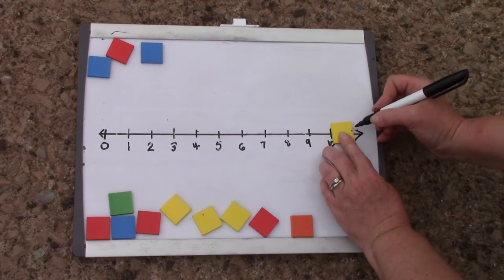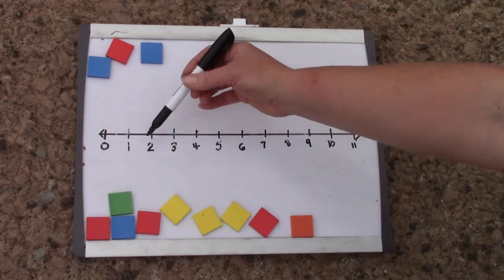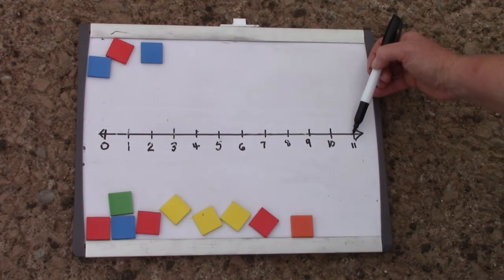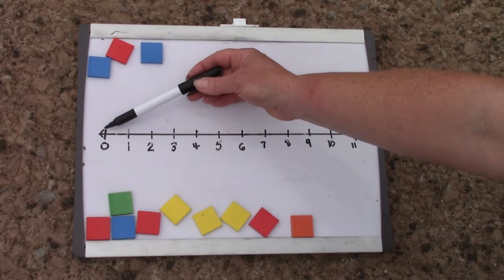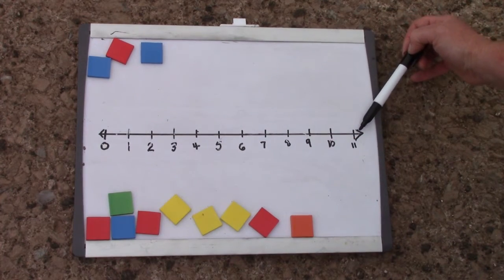10. And oh, I'm going to be able to fit one more on here. 11. I would like for you to make a number line starting at zero and going as far as you can. How far could you go on your paper? Maybe you could glue a couple of pieces of paper together.